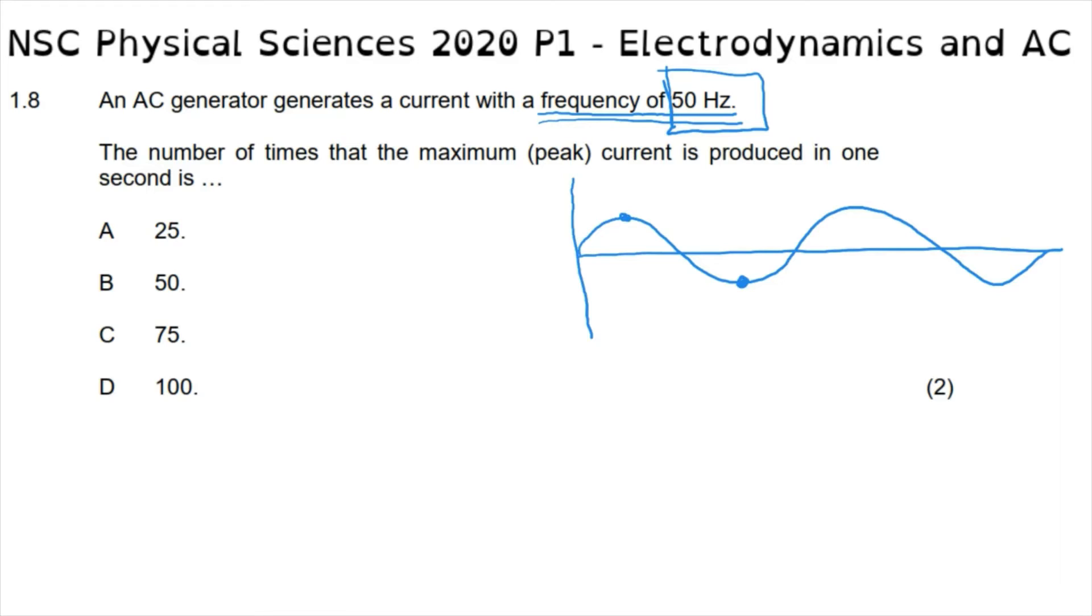Which means that in a frequency of 50 hertz, there are twice as many peaks achieved, which means that the correct answer here is option D, two times 50, 100.